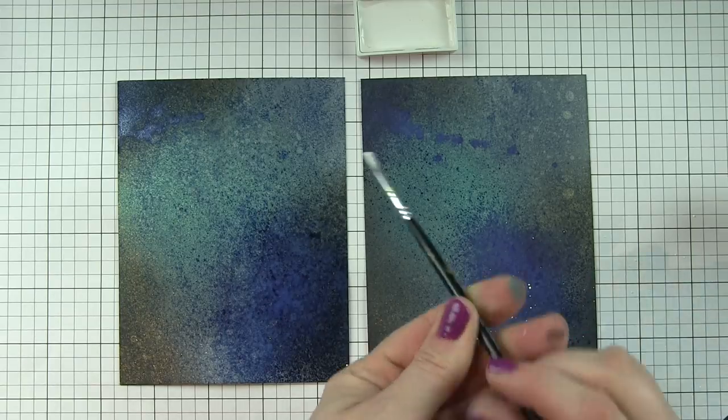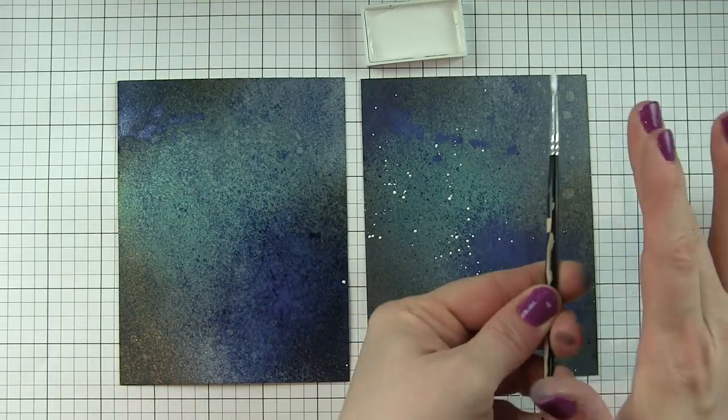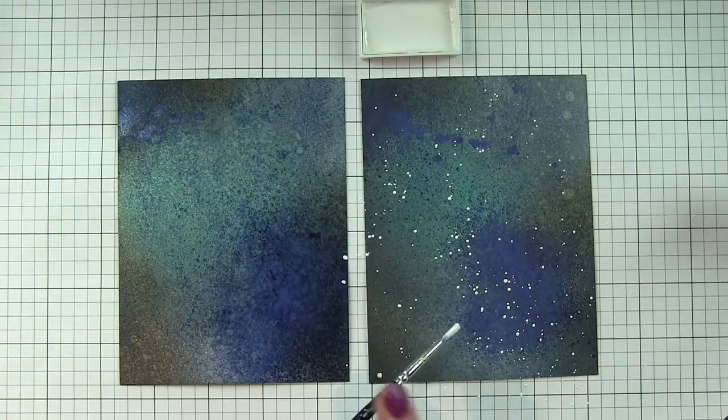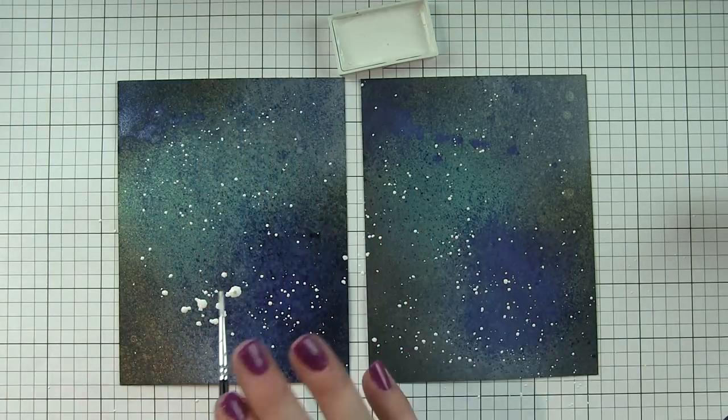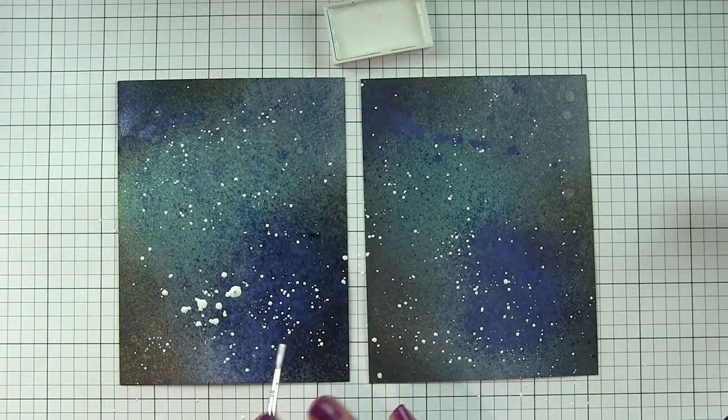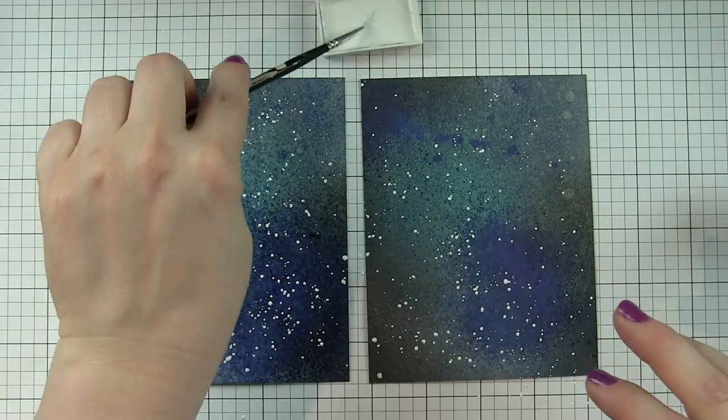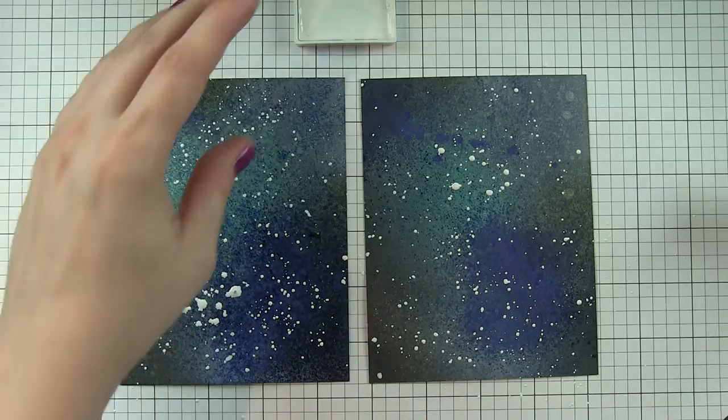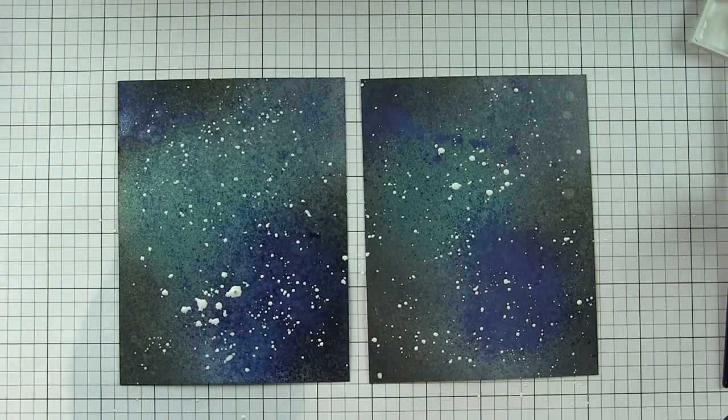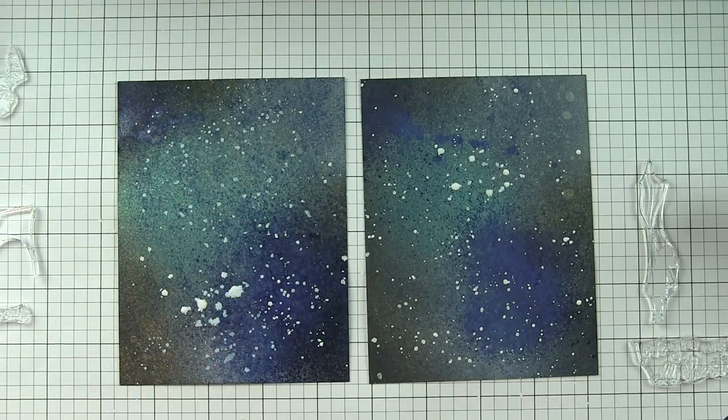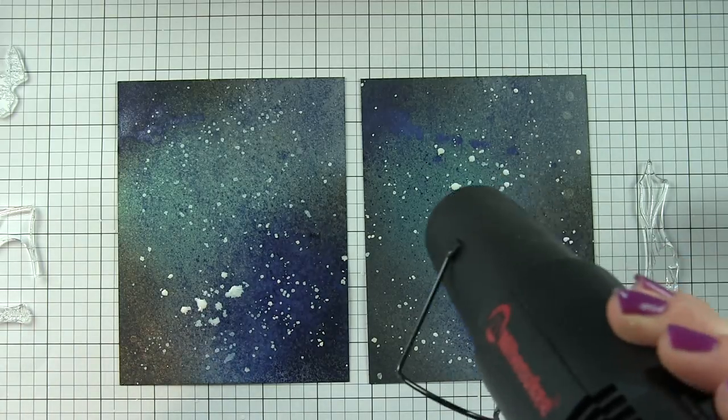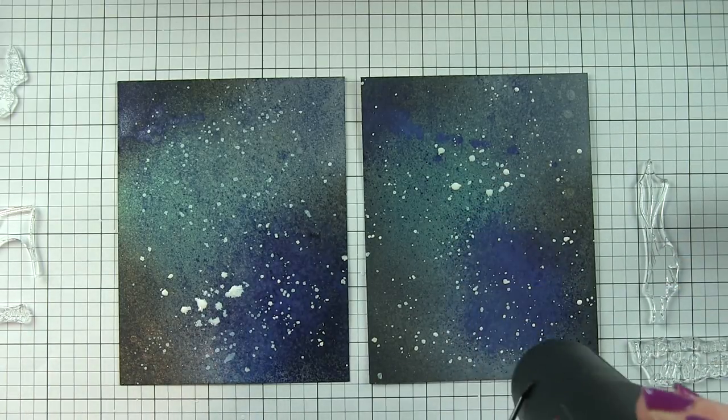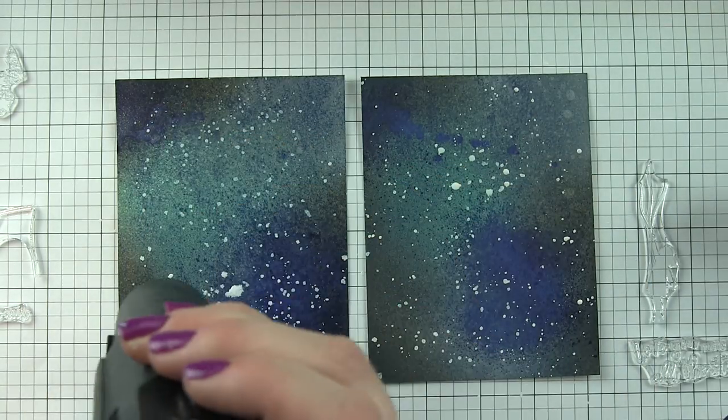I am simply flicking white droplets all over the background. What I want to do is create a galaxy night sky, a really awesome background for what I'm going to be stamping on top of it. There's going to be a ton of stamping and embossing that goes on top of this, but these are the bases of the design.